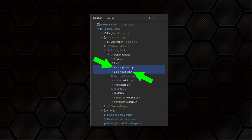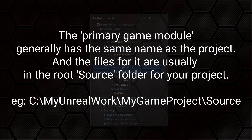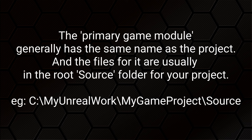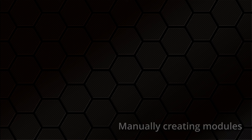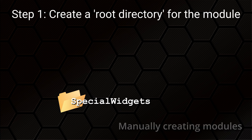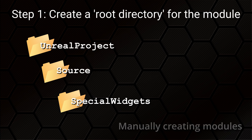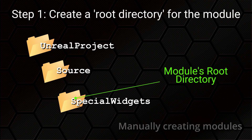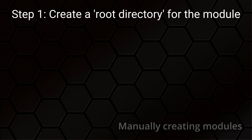Modules are split into two main kinds. There are regular modules, which is what we will make, and there is also the primary game module, which is a little bit different. All projects have a primary module, and although you might modify its code files you generally don't need to create them yourself as they are made as part of every project template. To make a regular module: first, you make a directory for your module and give it the same name you want the module to have — it will be placed somewhere under your source directory. Modules can exist under the source directory of your project, or under the source directory of your plugin if they are plugin modules.